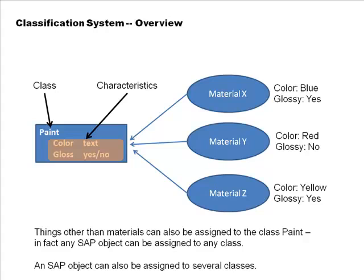Once characteristic values are assigned, you can search by entering class 'paint' and specifying desired values — for example, color=blue — and the system brings all matching objects. There is no restriction on what can be assigned to a class; any object can be assigned to any class, and an object can be assigned to several classes. A material could be assigned to both the 'paint' class and a 'perishability' class.